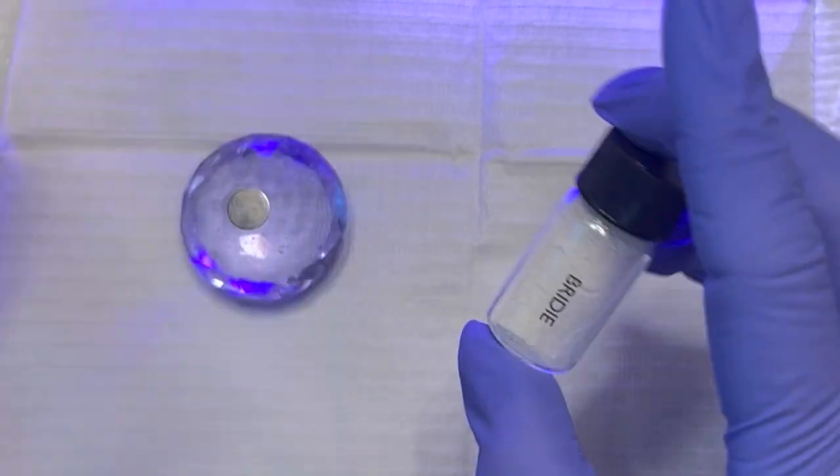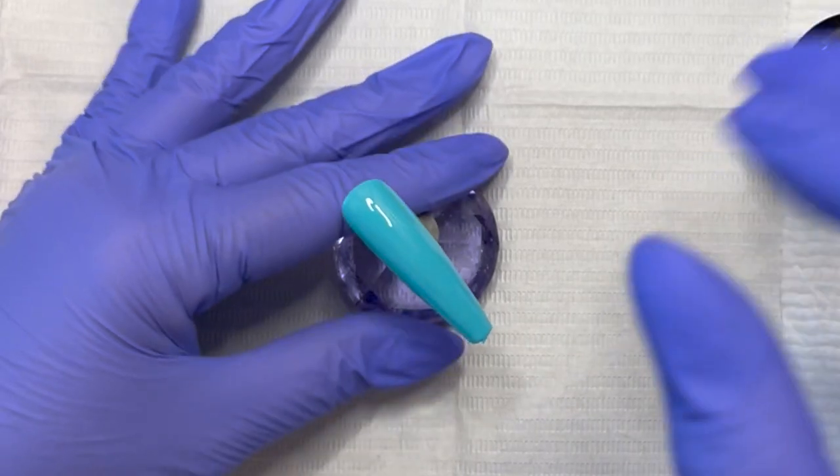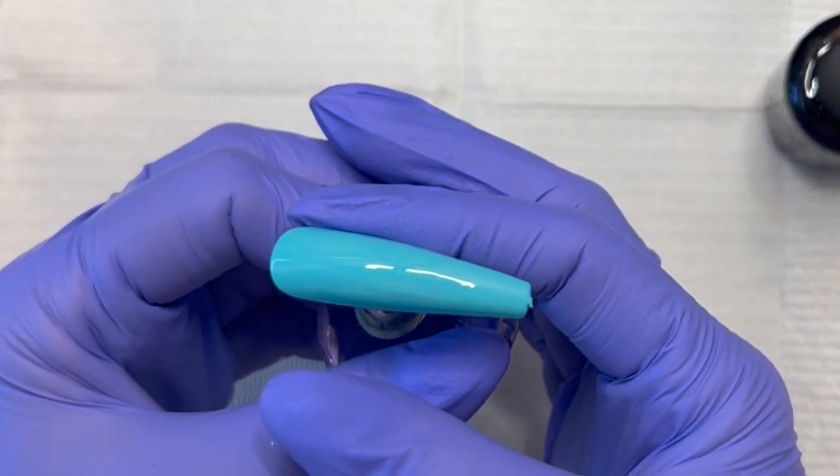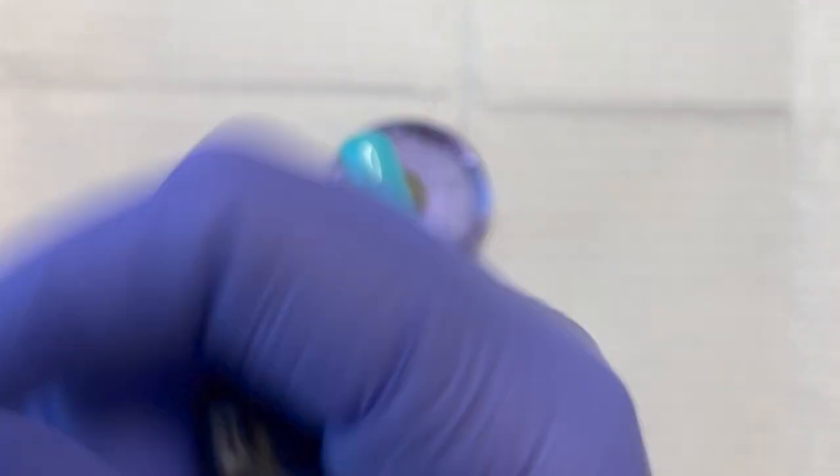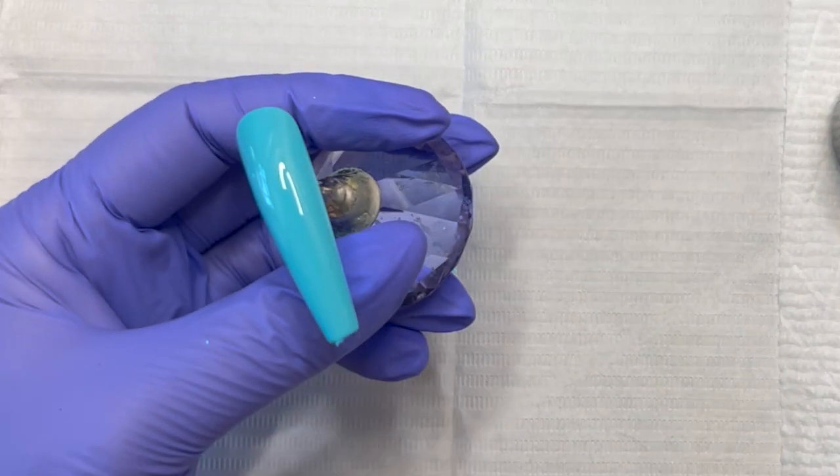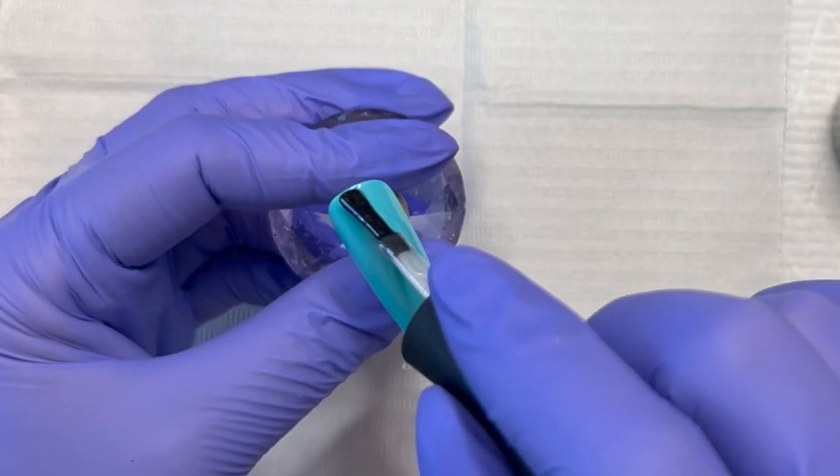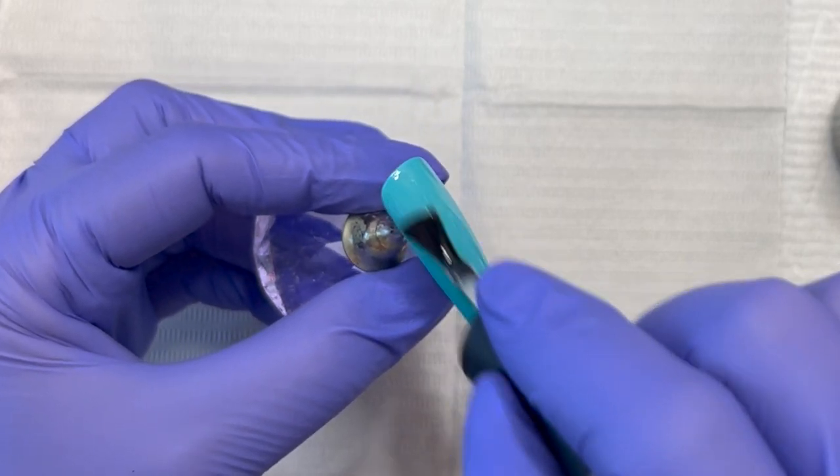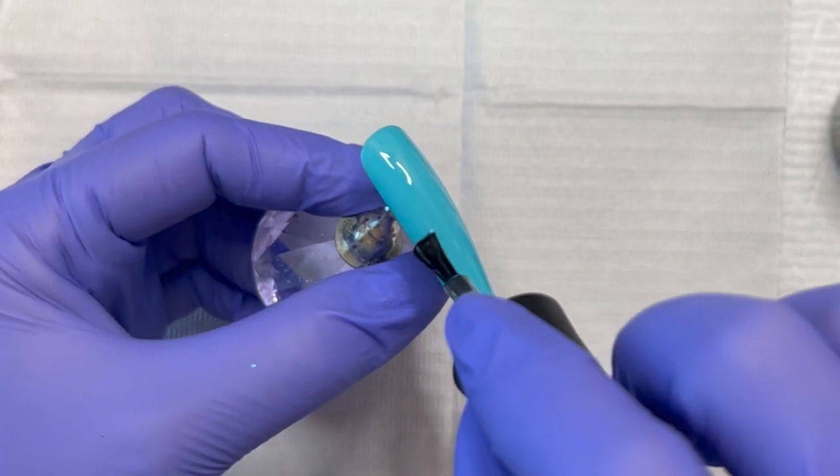Alright, so when you go in and you chrome, you'll want to use a no-wipe top coat. So I'm going to put on a coat of no-wipe top coat and then I'm only going to cure it for 20 seconds.